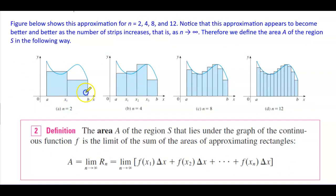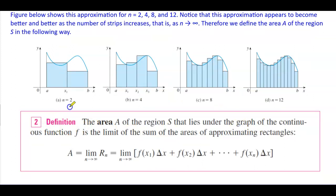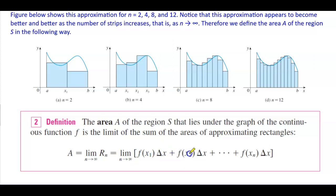Here n equals 2, then we get a better approximation with n equals 4, n equals 8, and n equals 12. By definition, the area A of the region S that lies under the graph of the continuous function f is the limit of the sum of the areas of the approximating rectangles: A equals the limit as n approaches infinity of R subscript n, which equals the limit as n approaches infinity of the sum of height times width for each rectangle up to n.